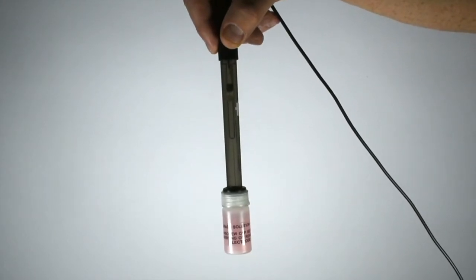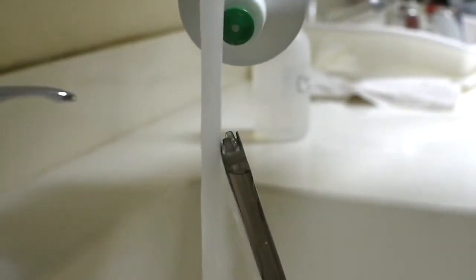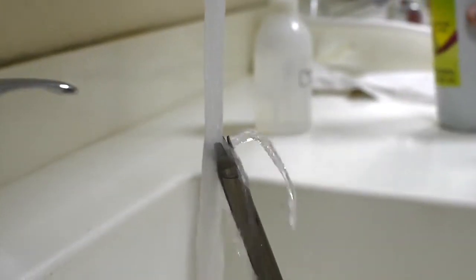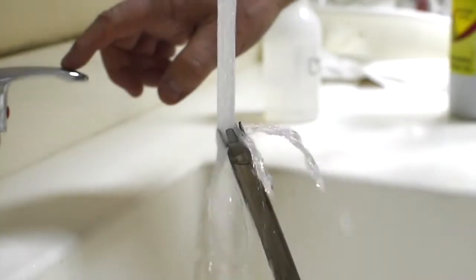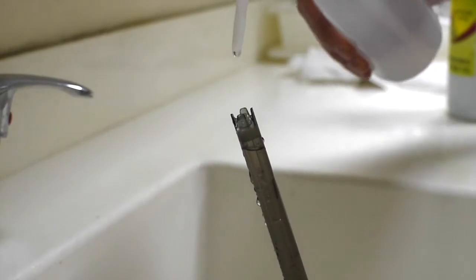Always store the electrode in its protective cap. If your electrode is covered with grease or oil, you can wash it with warm tap water and dishwashing soap. Then rinse with distilled water.